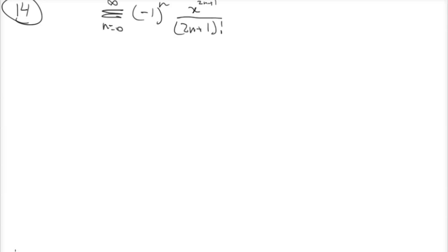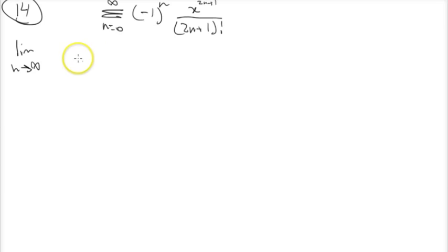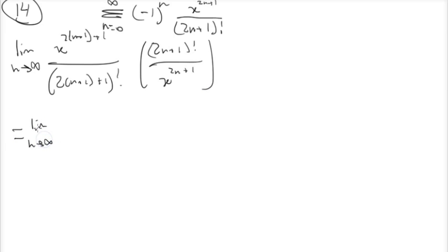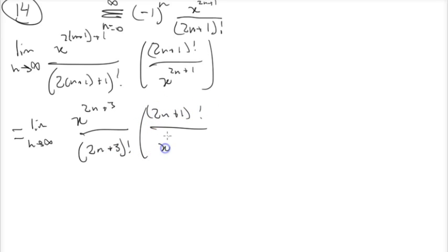Now let's do a slightly more complicated one — number 14, which asks us to find both the radius of convergence and the interval of convergence of this power series about 0. It's alternating, so we're going to use the ratio test once again. We find the limit as n approaches infinity of a sub n plus 1 in absolute value, so we add 1 to all the n's, giving us x to the 2 times n plus 1 plus 1 over 2 times n plus 1 plus 1 factorial, times 2n plus 1 factorial over x to the 2n plus 1.